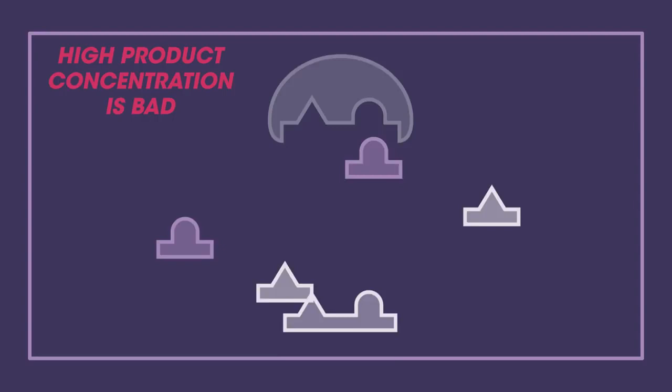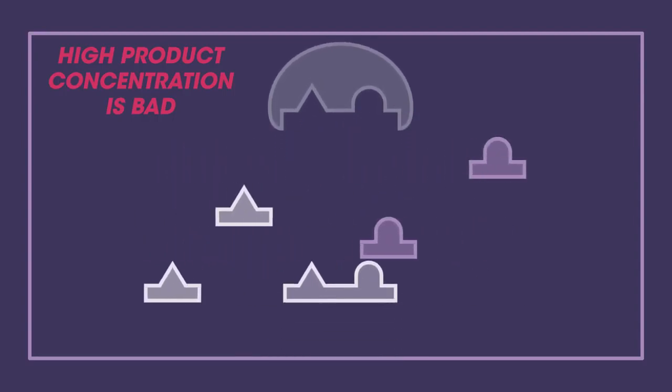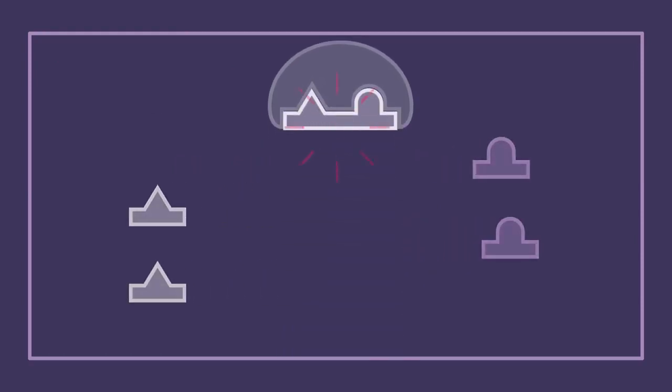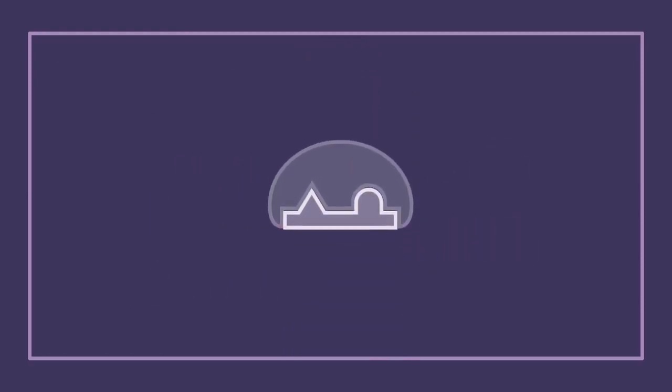Sometimes, if there is too much product around, then the reaction slows because the enzymes and substrates have less chance of bumping into each other. So the product needs to be removed for a higher rate of reaction.